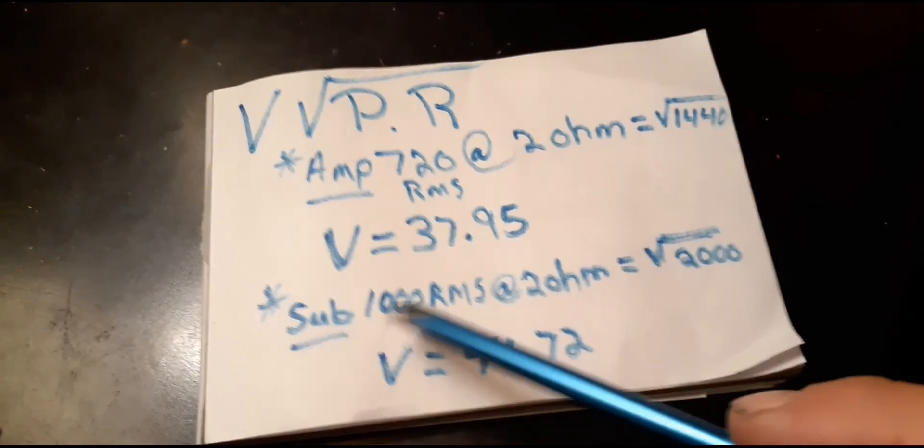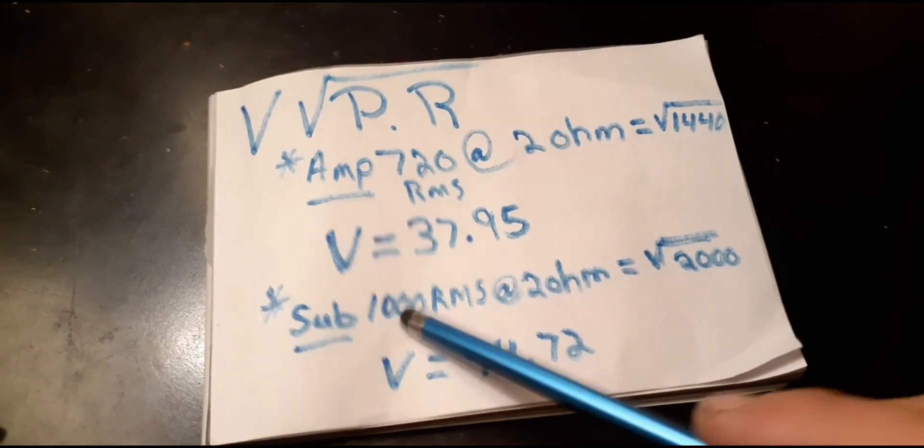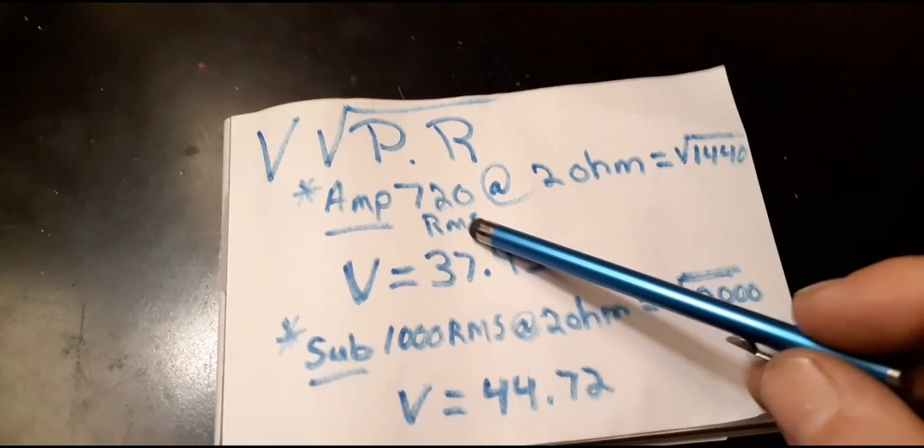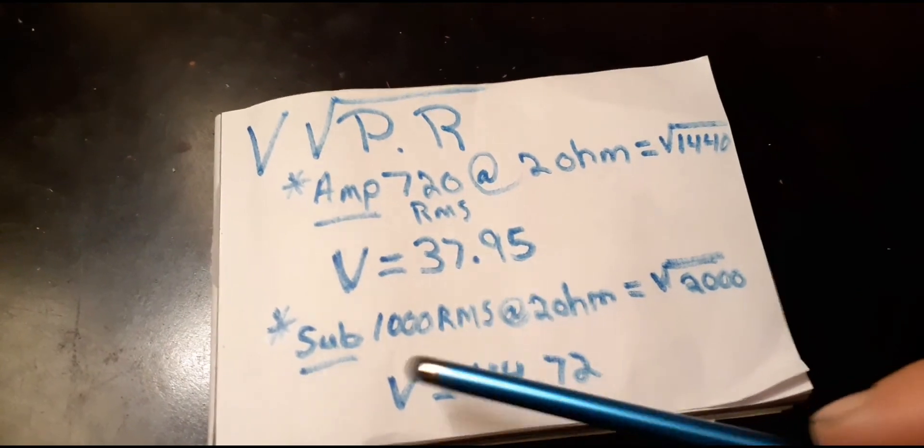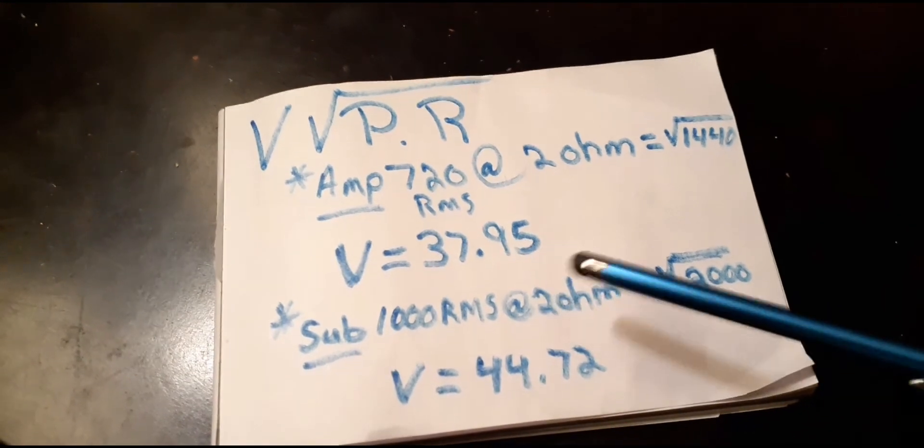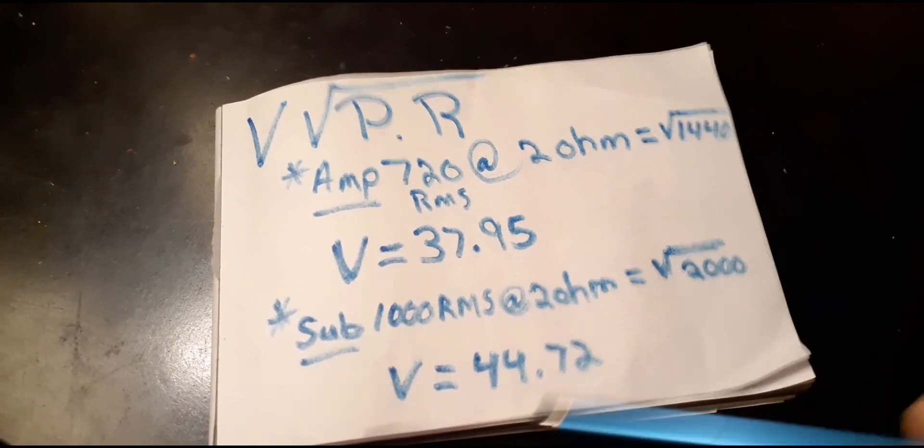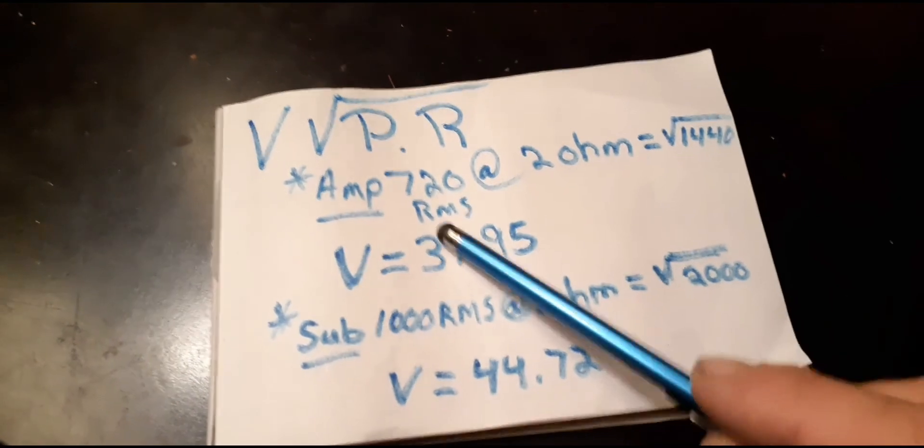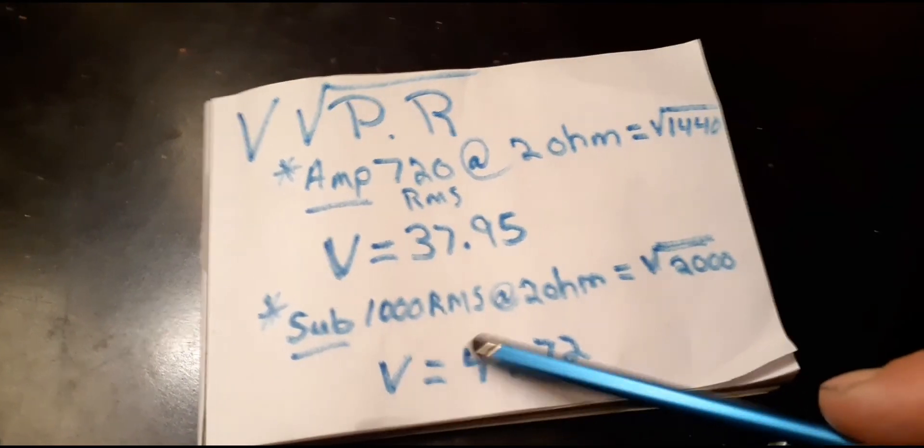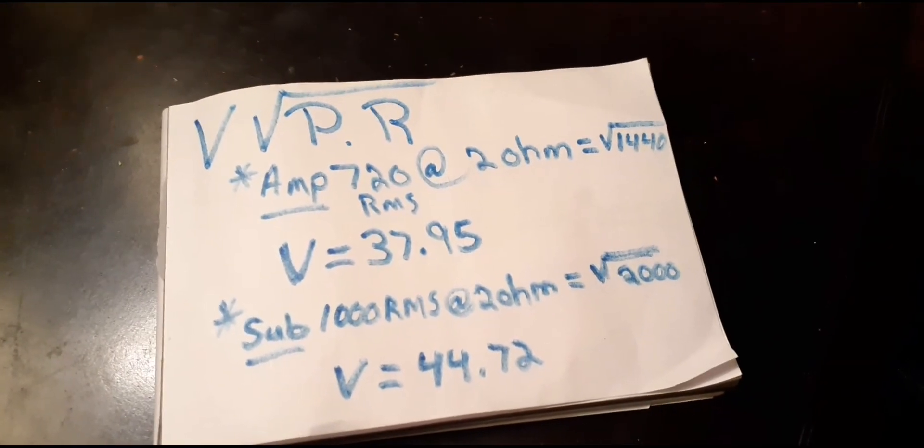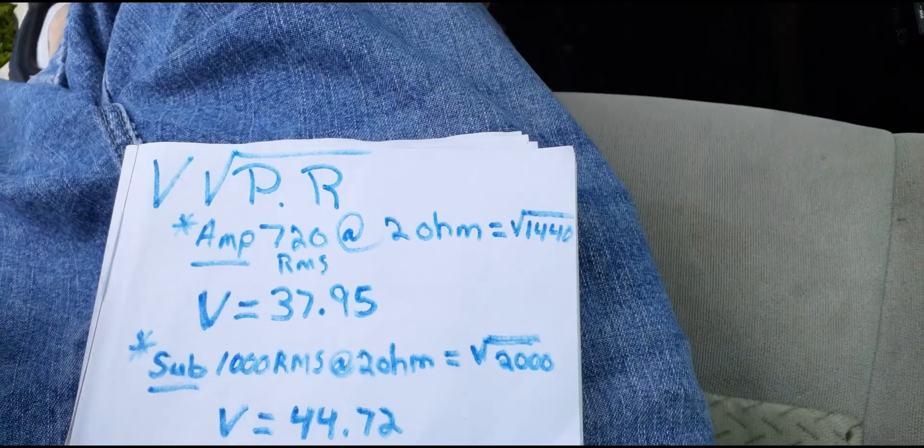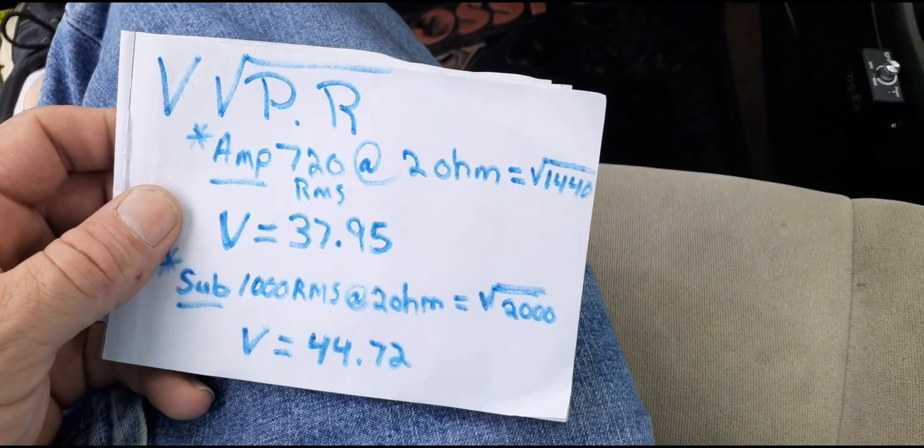Like say if this was a 500 watt RMS sub, you would want to use that voltage - 500 times two ohm - and then use whatever number you get, because you wouldn't want to use this one because you'd be pushing too much watts to your 500 watt sub. I hope that clears things up for some people and helps people out, like and subscribe.